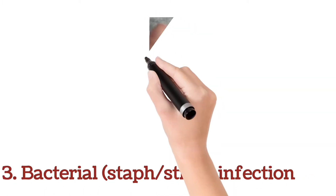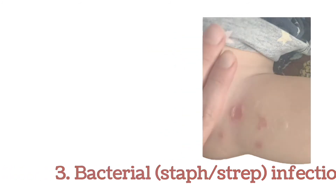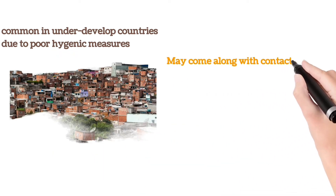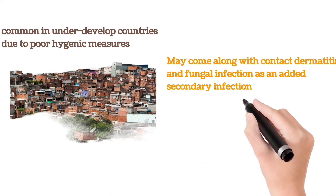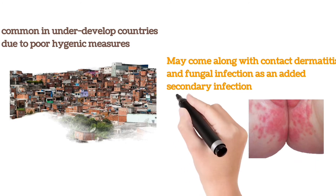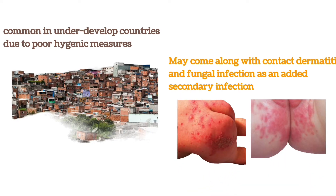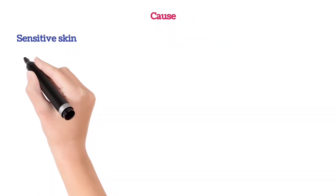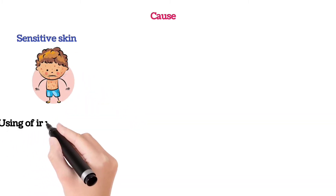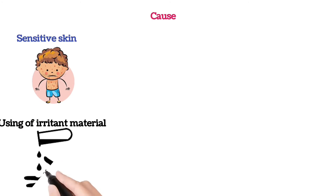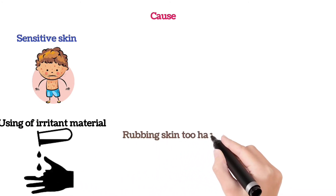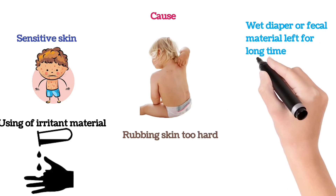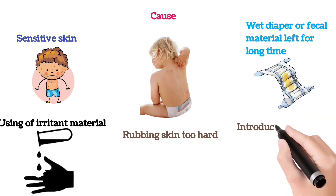Bacterial infection is very common in underdeveloped countries due to poor hygienic measures. It may come along with contact dermatitis and fungal infection as an added secondary infection. Causes include sensitive skin, use of irritant material wipes or diapers, rubbing the skin too hard, wet diaper or fecal material left for a long time, or introducing new food.